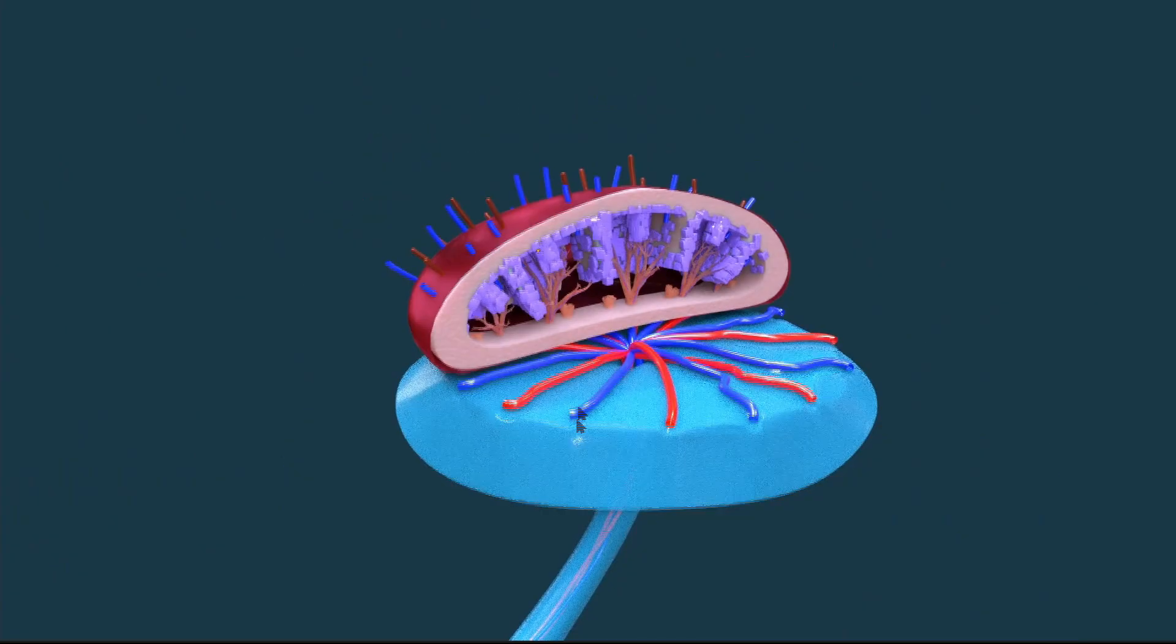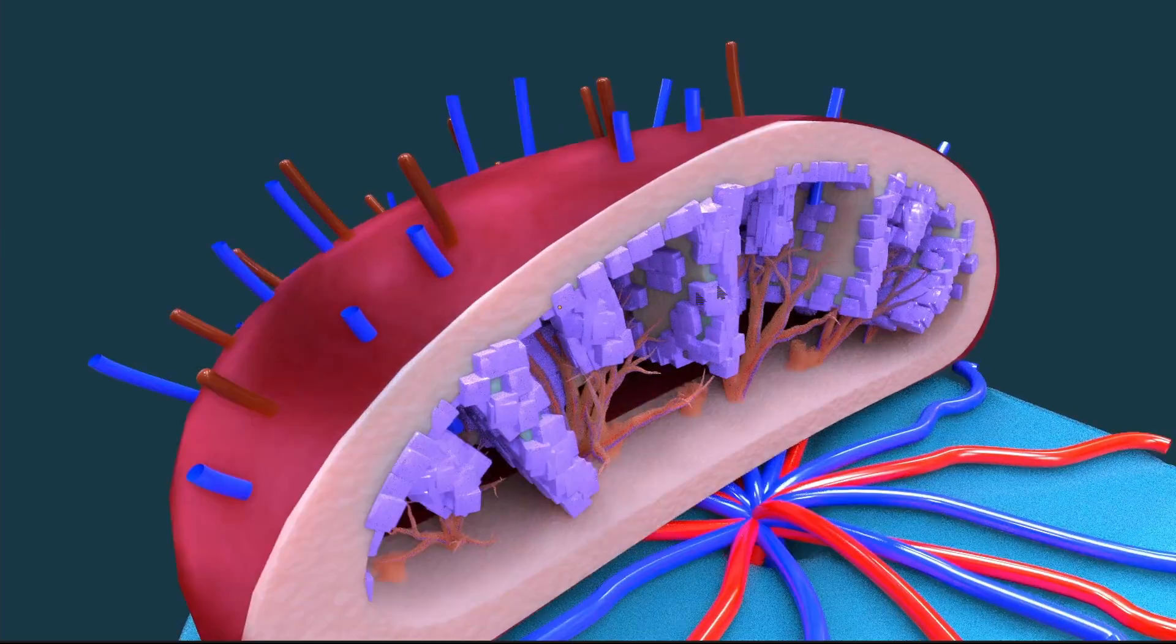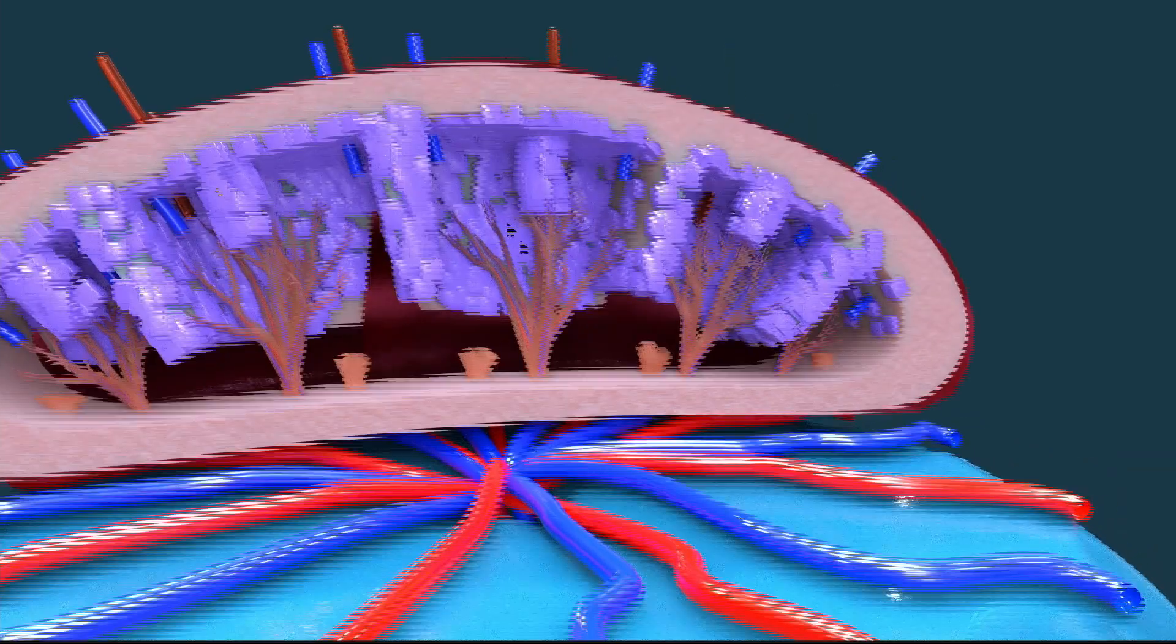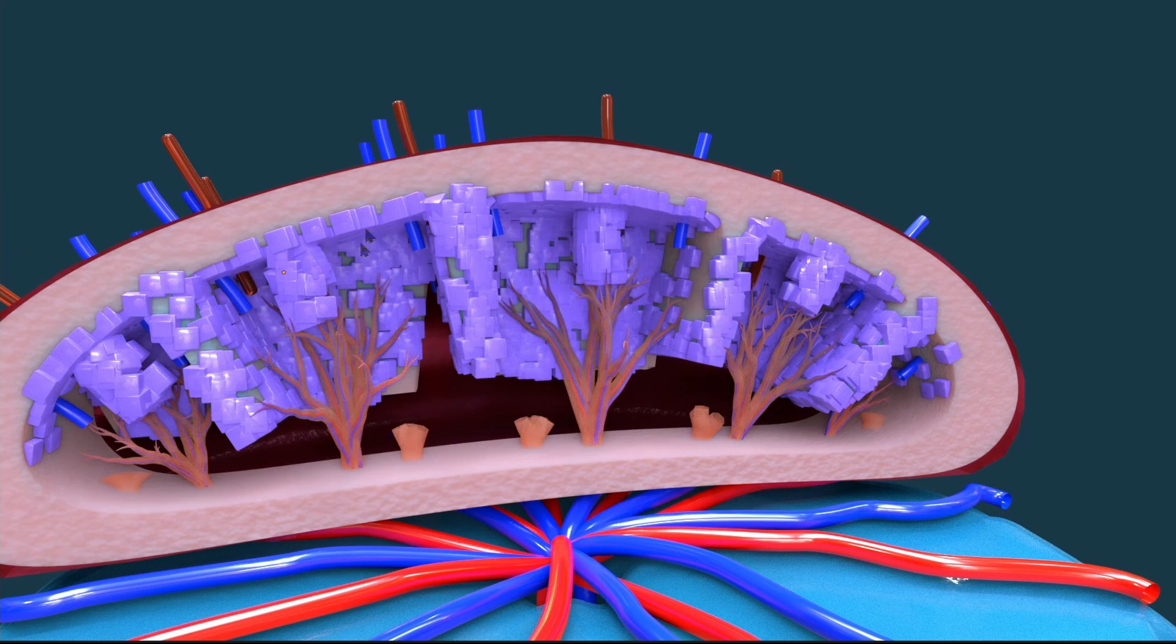Now, how this placenta works: these umbilical arteries bring the less oxygenated blood into these chorionic villi. These are basically branch tertiary villi and then the fluid will flow into these cotyledons, and then the exchange of material will occur between the maternal and fetal blood.